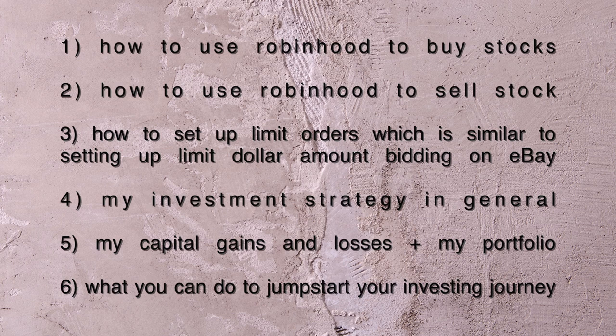This video will be in six parts. Part one: how to use Robinhood to buy stocks. Part two: how to use Robinhood to sell stocks. Part three: how to set up limit orders, which is similar to setting up a limit dollar amount bidding on eBay. Part four: my investment strategy in general. Part five: my capital gains and losses and portfolio overview. Part six: what you can do to jumpstart your investing journey, get free stocks, and continue getting free stocks. By the end of this video, you will be able to start investing in not only Robinhood but on any platform of your choice with long-term gains guaranteed.